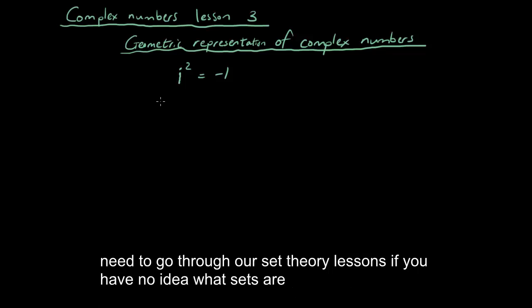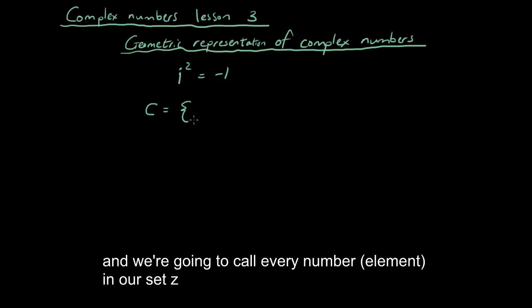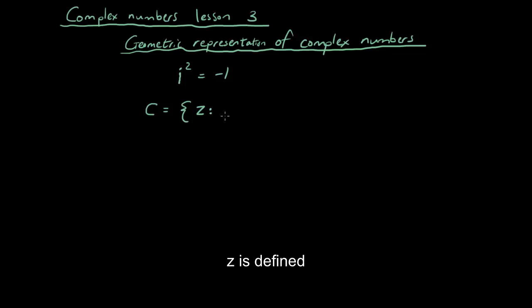You probably need to go through our set theory lessons if you have no idea what sets are. But basically the set of complex numbers can be defined so that C is equal to the set of, and we're going to call every number in our set z. And it is defined, z is defined such that z is equal to x plus y times i, where x and y are both elements of real numbers.